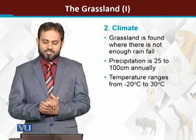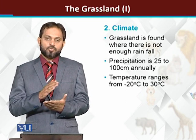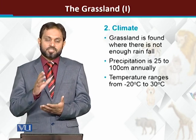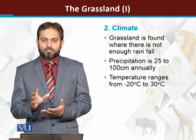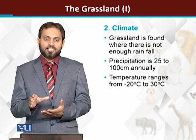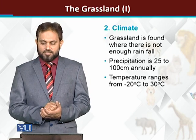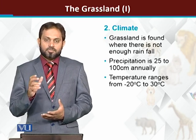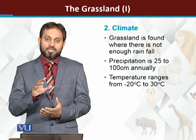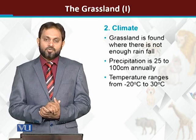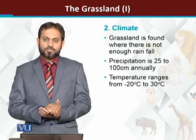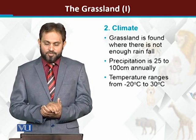جیسے ہم نے کہا کہ desert سے less severe conditions ہوں گے، جبکہ forest کی نسبت conditions تھوڑی زیادہ severe ہوں گی — یعنی precipitation یا rainfall کم ہوگی۔ Forest کے اندر rainfall زیادہ ہے۔ So the annual rainfall in grasslands ranges from 25 to 100 centimeters annually. Forest کے لیے 75 سے 150 centimeter ہوتی ہے، جبکہ grasslands کے لیے 25 سے 100 centimeter per year precipitation ہوتی ہے۔